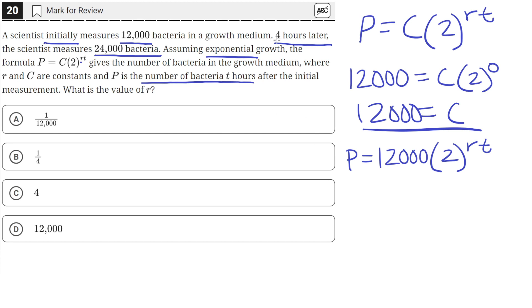Our problem statement says that four hours later, the population becomes 24,000. So we can plug that in for P and T, then solve for the value of R. The population after four hours is 24,000, so P equals 24,000. We still have 12,000 times two raised to the R, but this time T equals four, because this is four hours later.